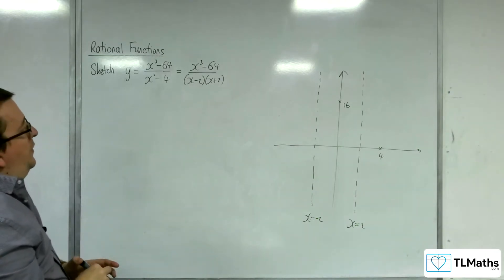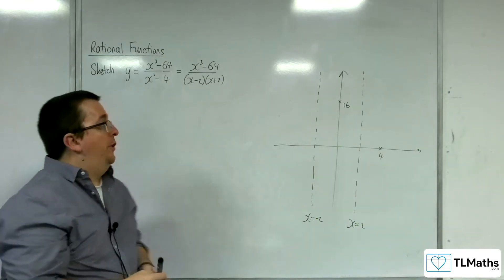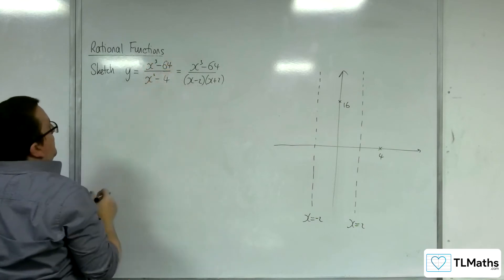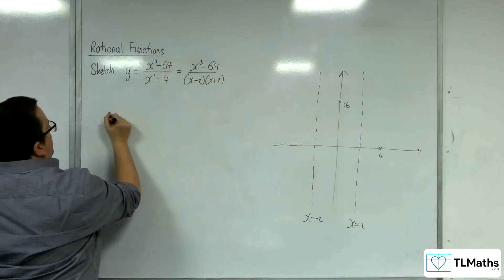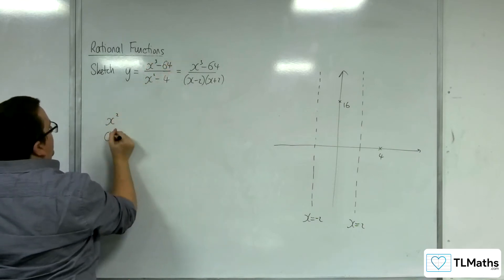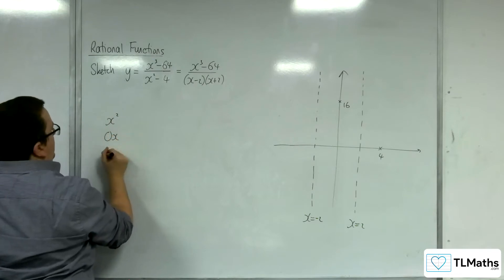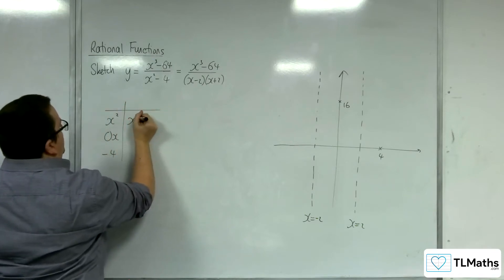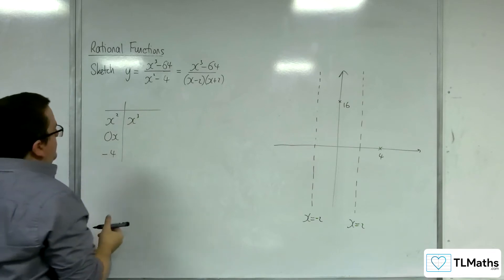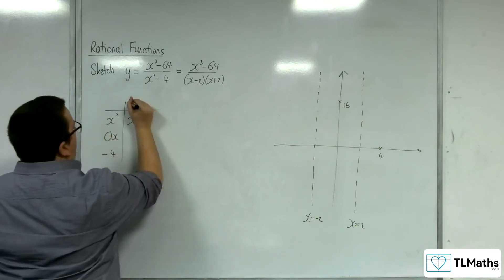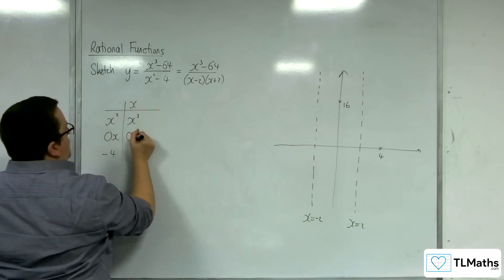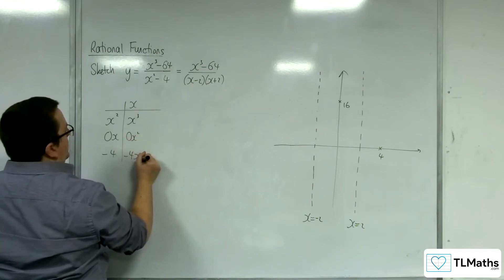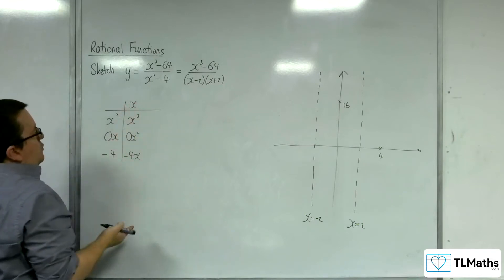Now we'll look for the oblique asymptote by dividing the numerator by the denominator. So we've got x squared plus 0x minus 4. I want x cubed, so x squared into x cubed goes x. x times 0x is 0x squared. x times minus 4 is minus 4x.